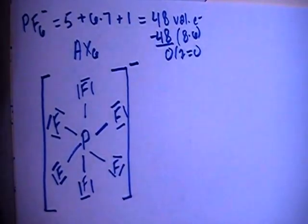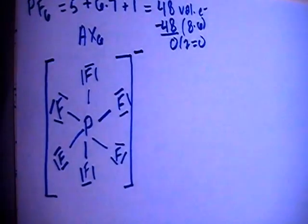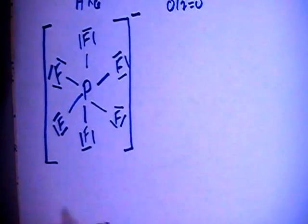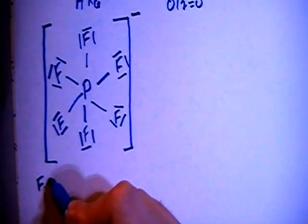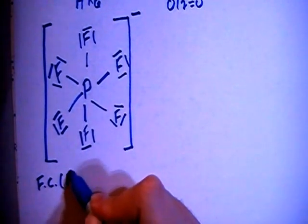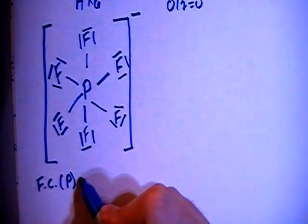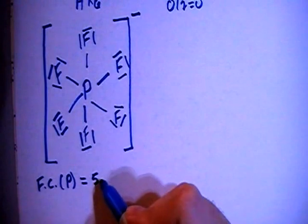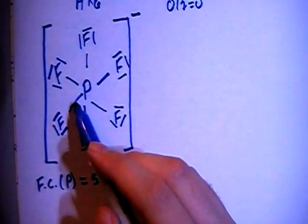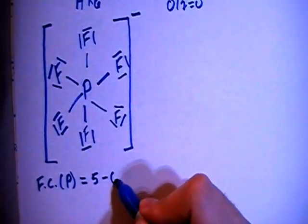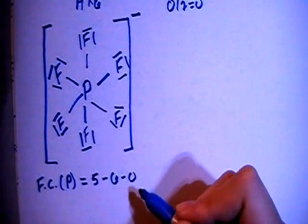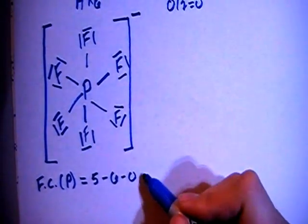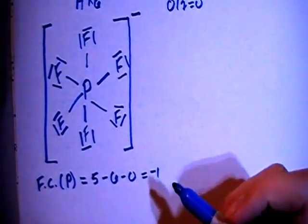So let's go ahead and verify that this is correct by checking the formal charges. The formal charge on the phosphorus in the center is going to be the 5 valence electrons brought in, minus 1, 2, 3, 4, 5, 6 bonds, minus 0 non-bonding electrons for a formal charge of negative 1.